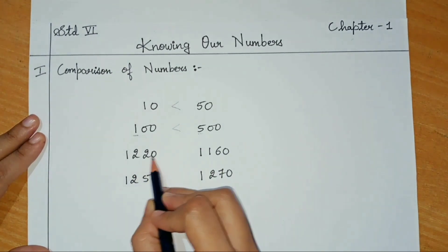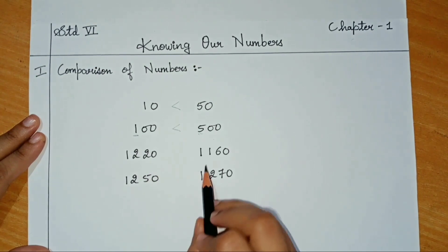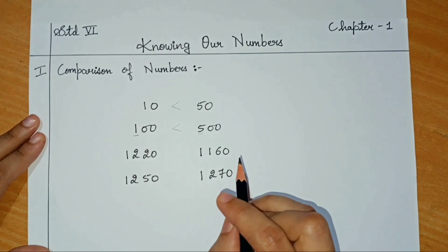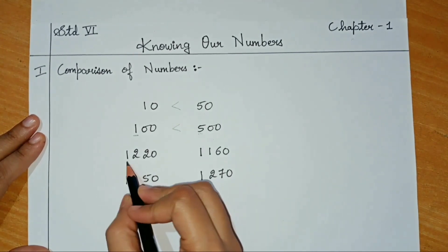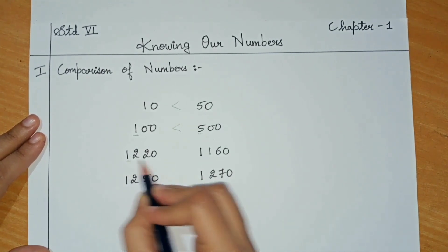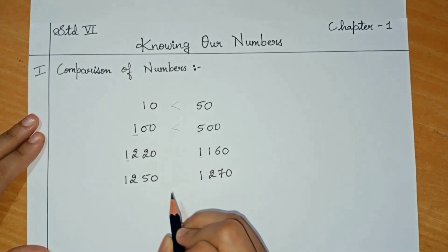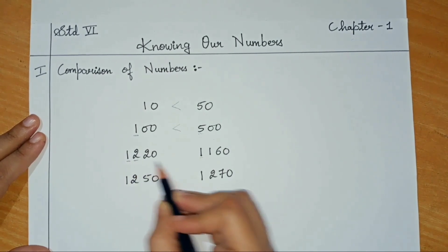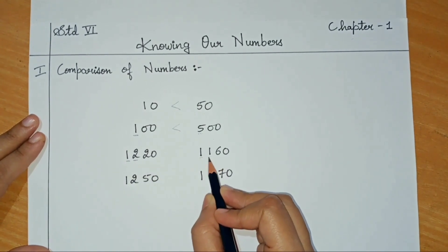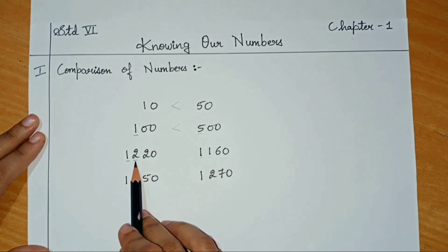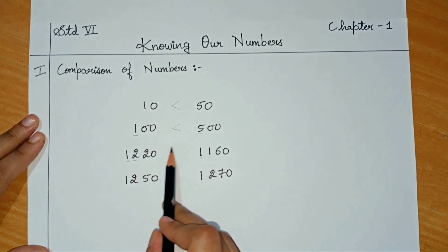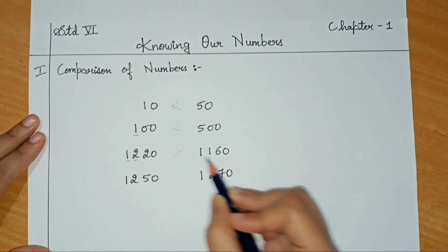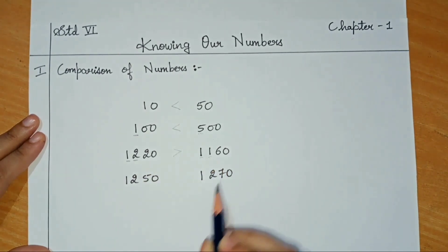Next, if I ask you to compare number 1220 with number 1160, you have to start comparing by the first digits. Here the first digit is 1 and here the first digit is also 1. So now let us move to the second digit. Here the second digit is 2 and here the second digit is 1. Since 2 is bigger than 1, we can say that 1220 is greater when compared to 1160.